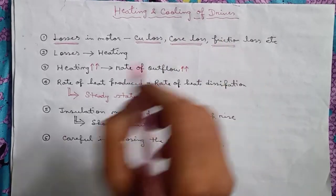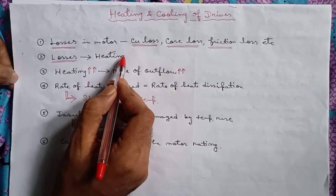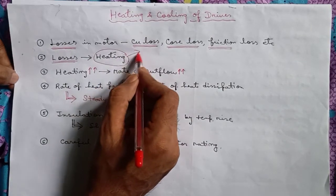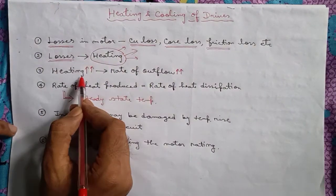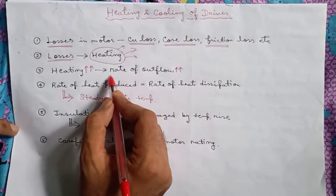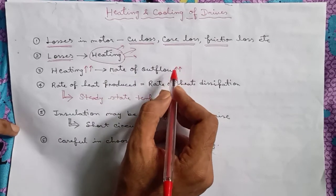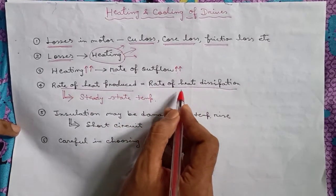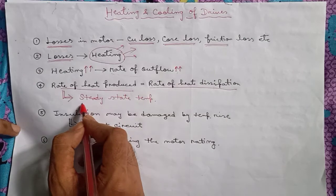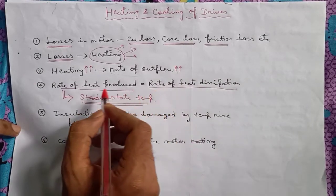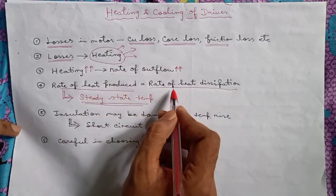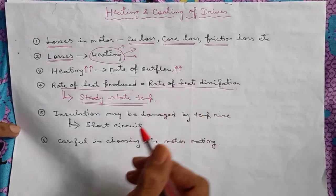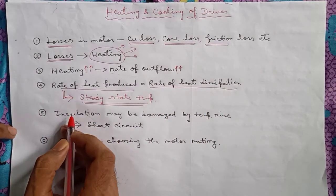These losses lead to heating of the machine. A part of the heat produced will flow out to the surrounding. As the heat produced increases due to these losses, the rate of outflow also increases. At one point, the rate of heat produced will be exactly equal to the rate of heat dissipated. At this point, the steady state temperature is reached — that is, after reaching the point where rate of heat produced equals rate of heat dissipation, no temperature rise will occur and the machine will reach a steady state temperature.